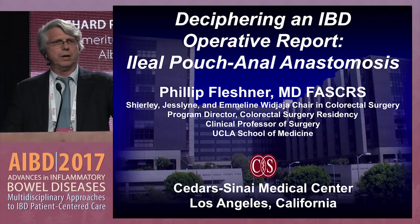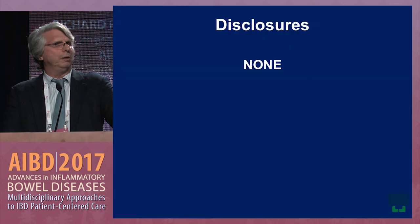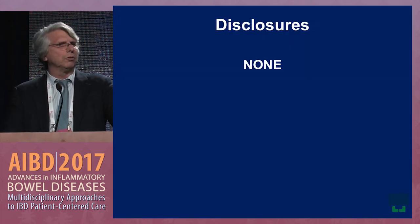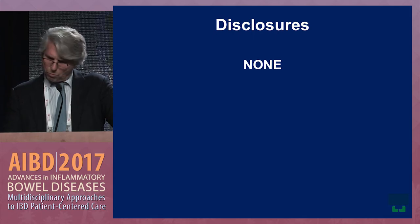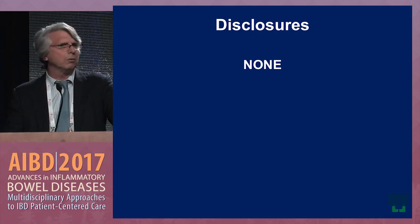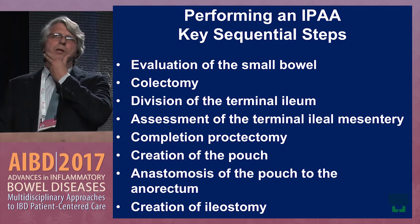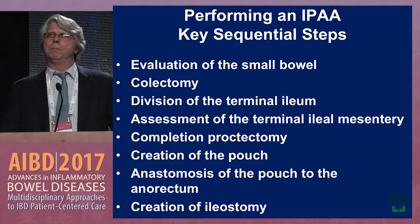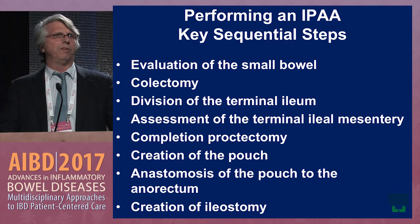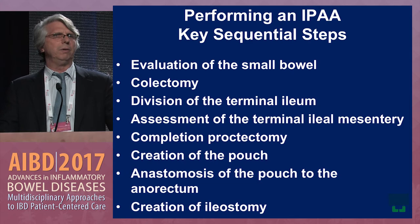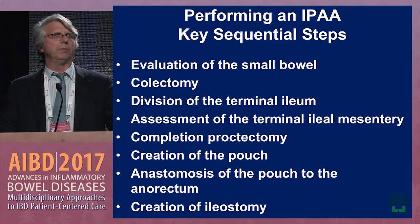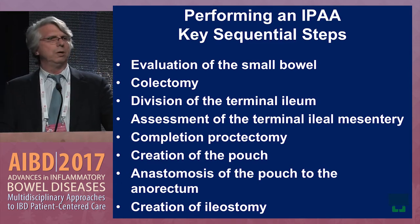Good afternoon. I have no disclosures. When we do an ileal pouch-anal anastomosis, we first evaluate the small bowel, do our colectomy, divide the terminal ileum to use for our J pouch, assess the terminal ileum mesentery for length, complete the proctectomy, make the J pouch, anastomose it to the anorectum, and create an ileostomy. A lot of steps.